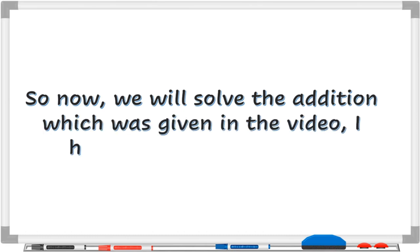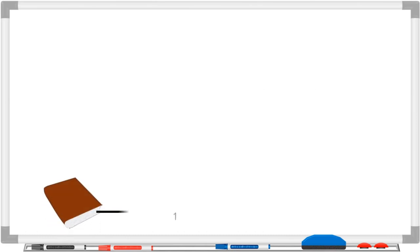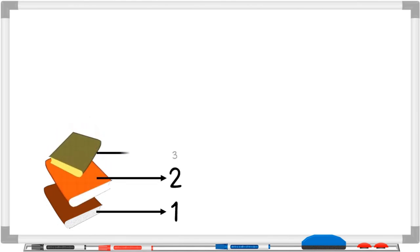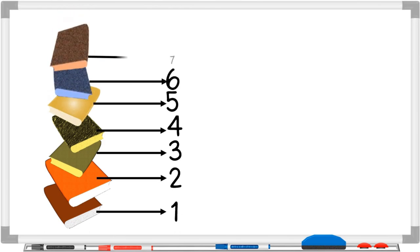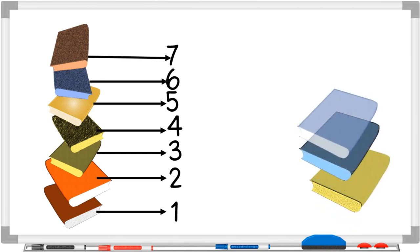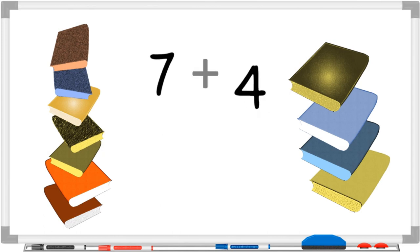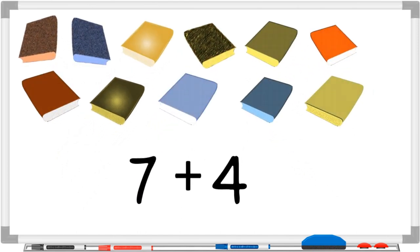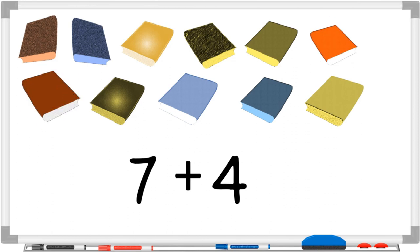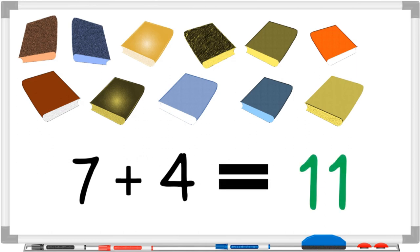We will now solve the addition from the story shown at the start. How many books did Yash have before? Seven. Correct — one, two, three, four, five, six, seven. His father gave him four more books. So what is seven plus four? One, two, three, four, five, six, seven, eight, nine, ten, eleven. Seven plus four is equal to eleven.